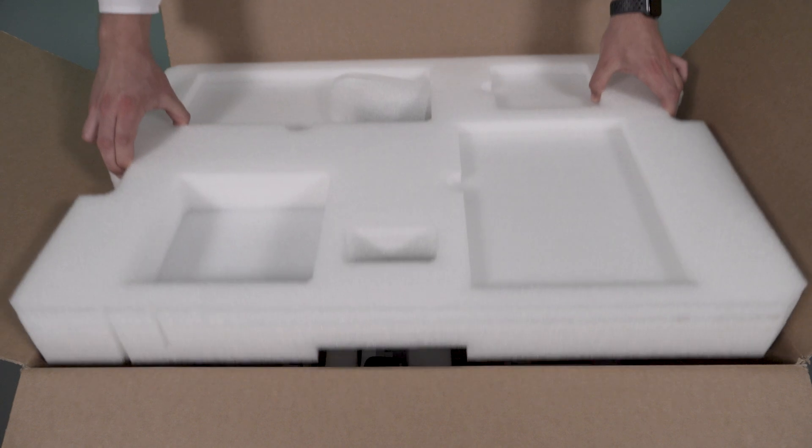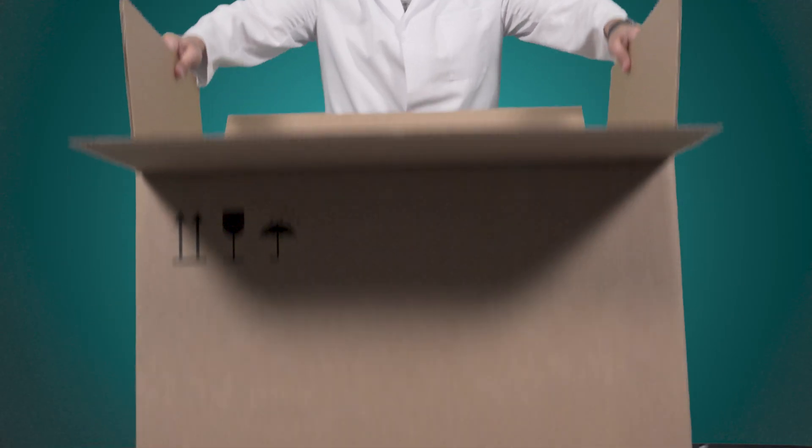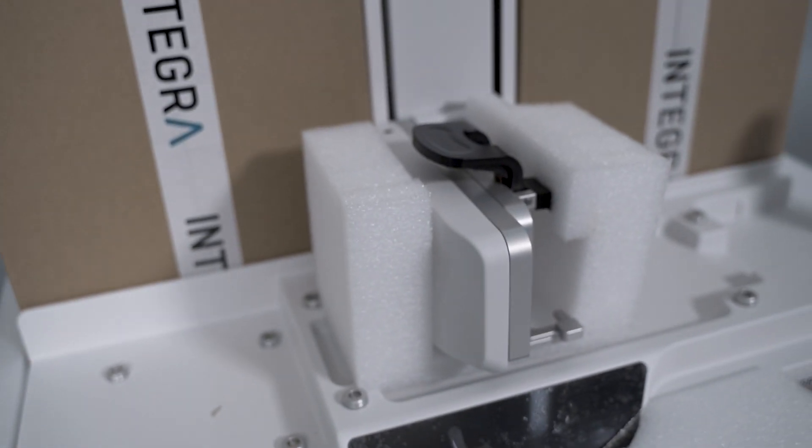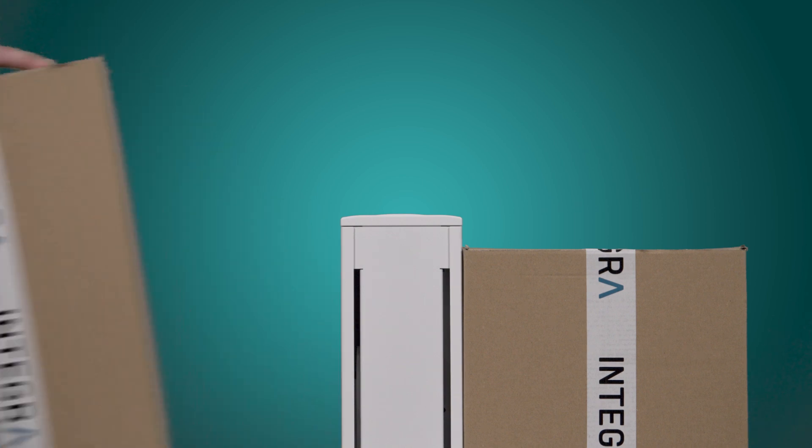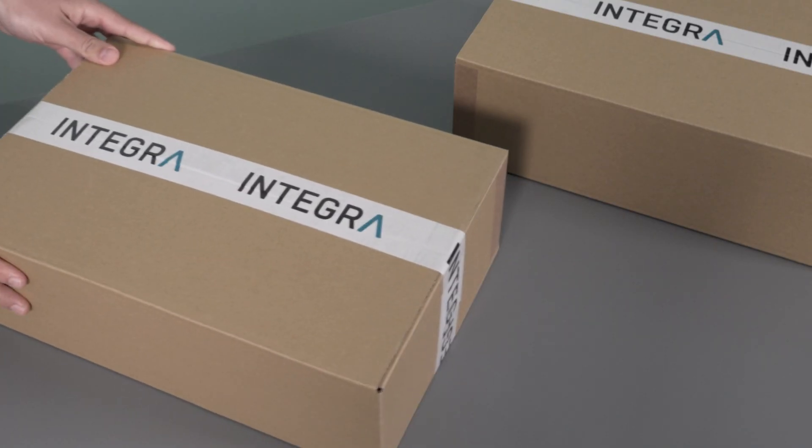Finally, take out the transport protection foam. Remove both accessory boxes, the outer carton box, and the two carton shields.